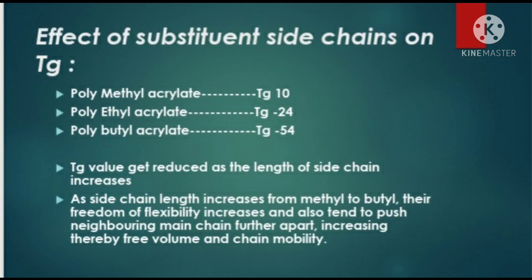Now we will study the effect of substitution side chain on glass transition temperature, taking examples of methyl, ethyl, and butyl polyacrylates. In this series, the transition temperature decreases as the side chain length increases. As the side chain length increases from ethyl to butyl, the freedom of flexibility increases, the linear chain molecules tend to push neighboring main chains further apart, chain mobility becomes greater, and thus Tg decreases.